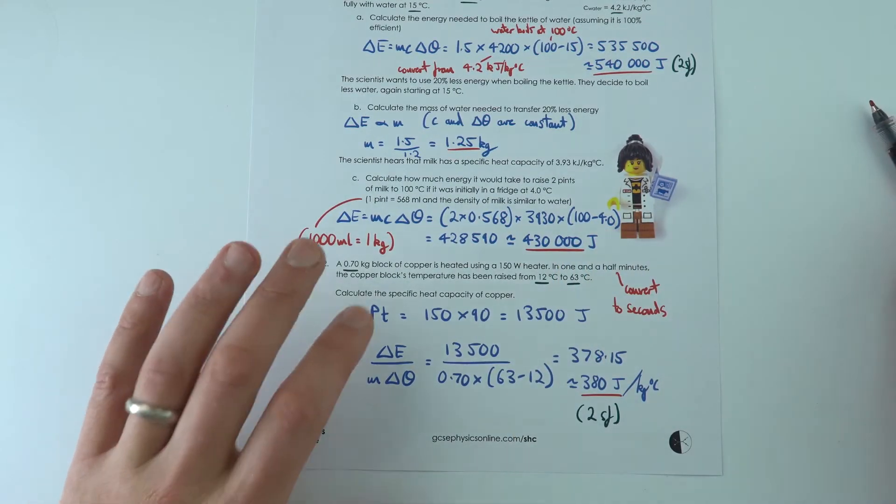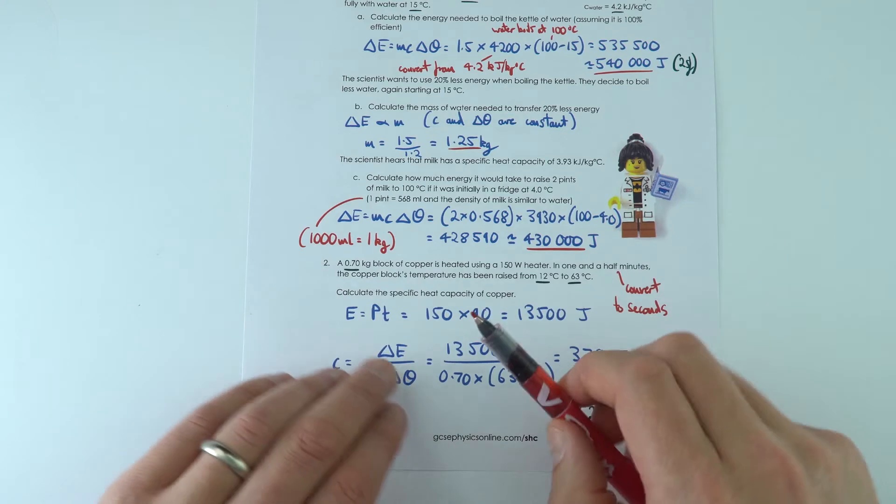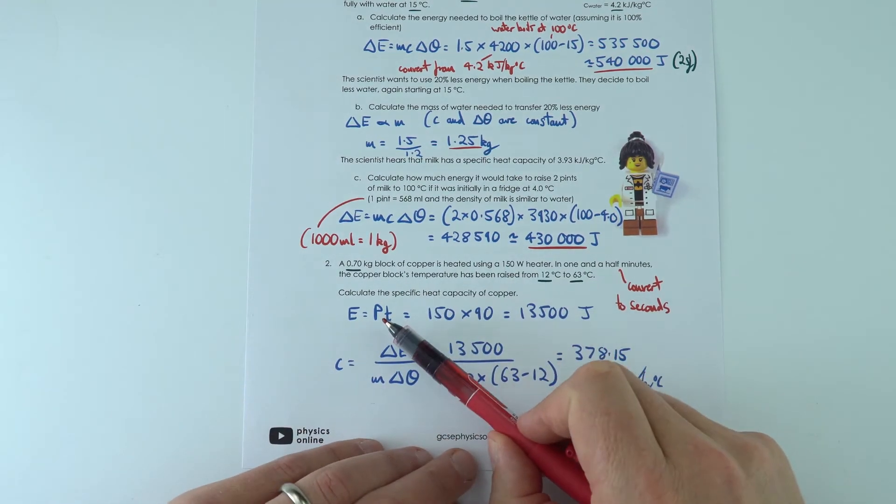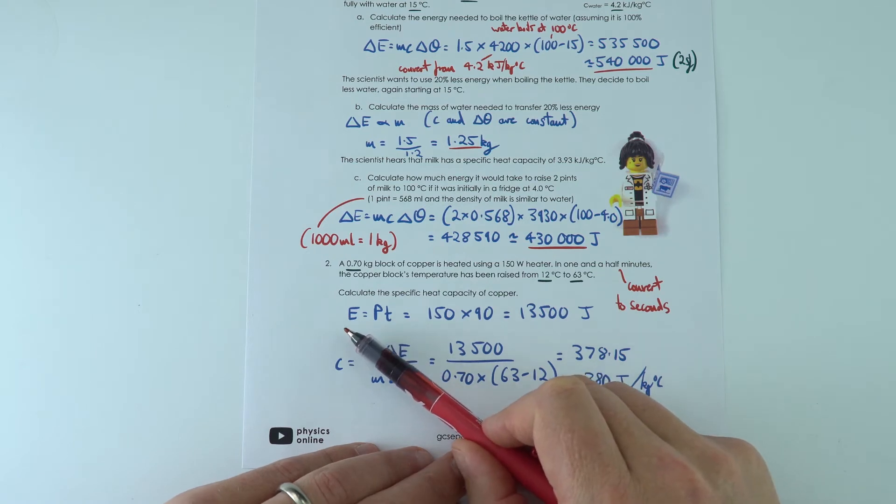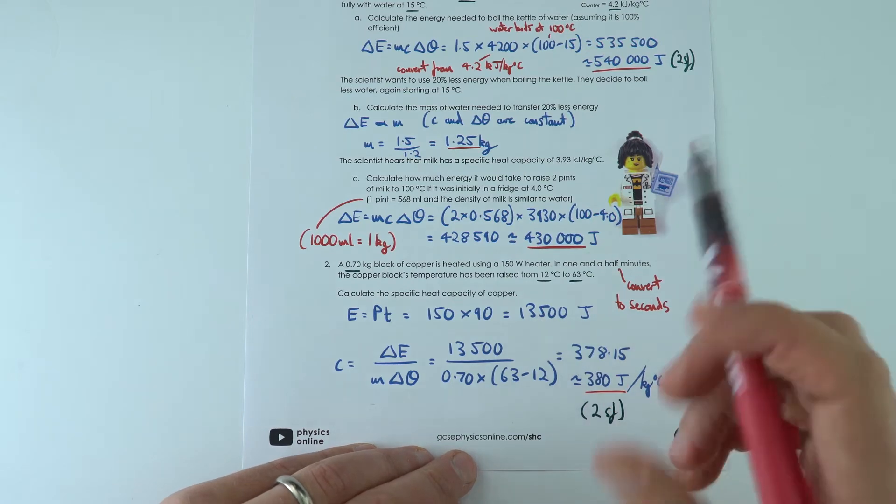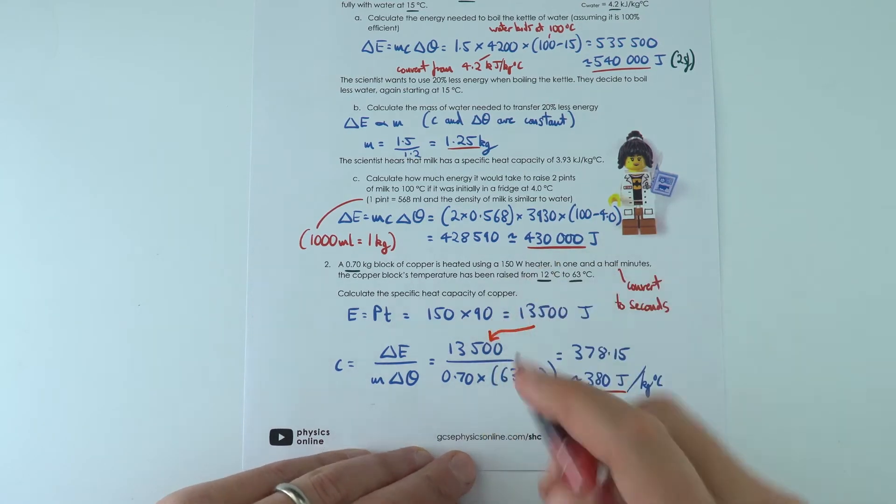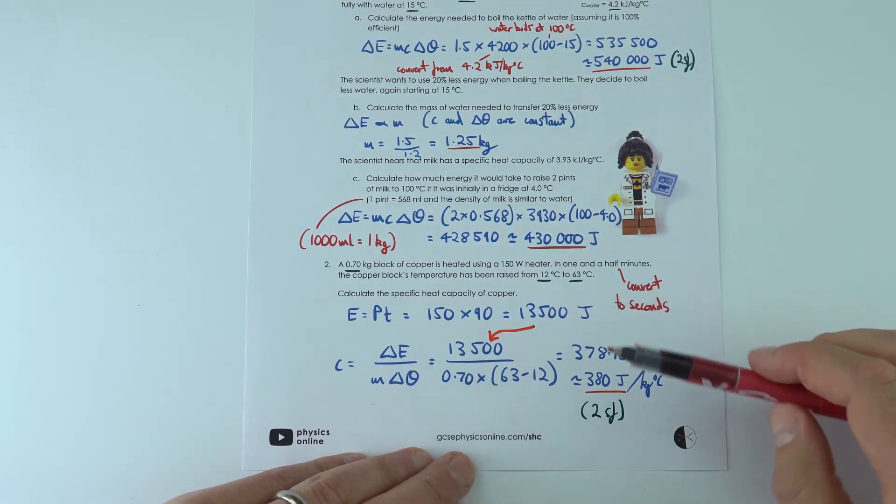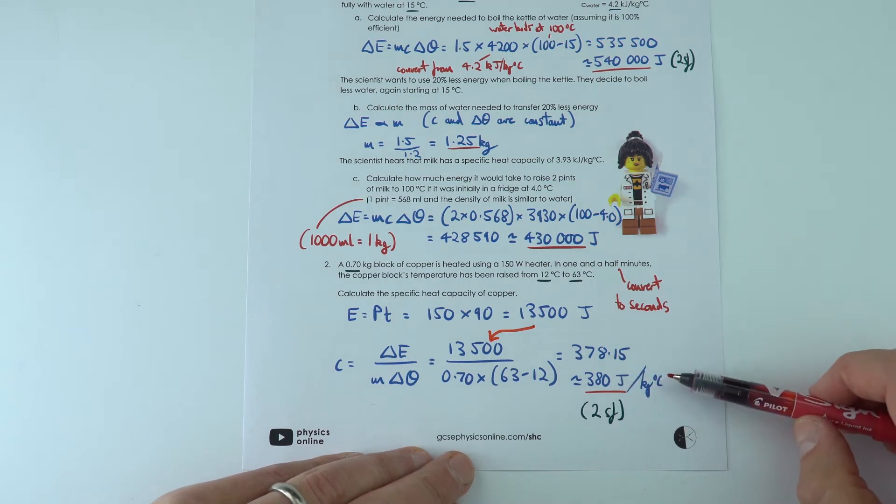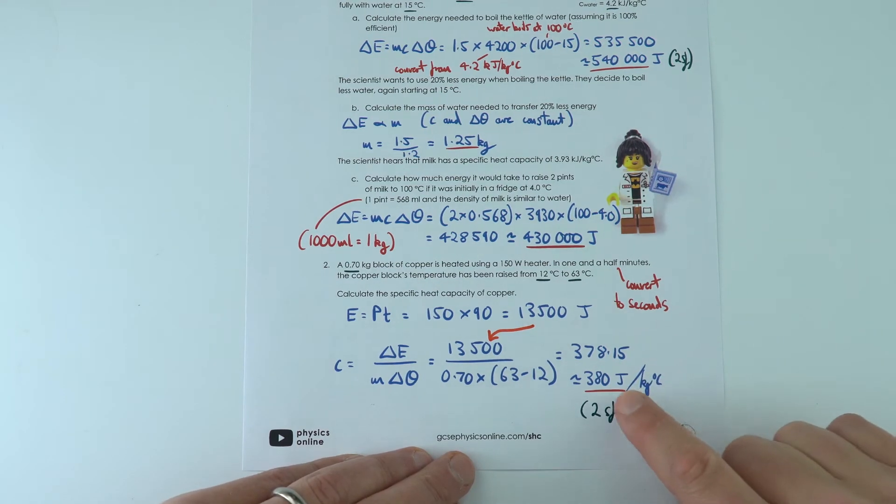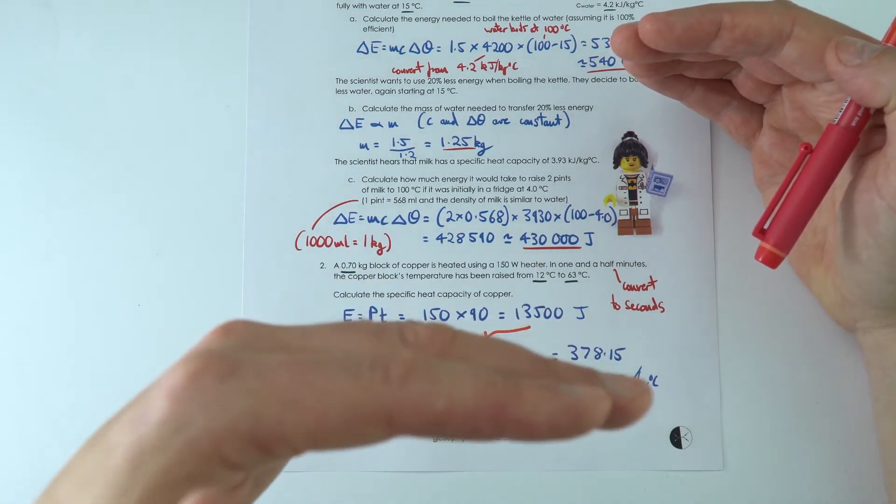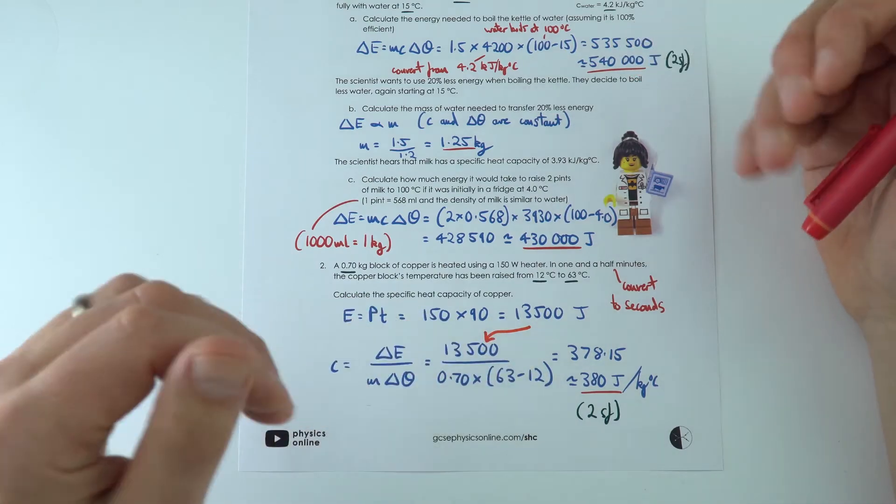The next one is a two-part calculation. The first bit needs to look at the energy transferred. This is where you need to remember that power is equal to energy divided by time. So if we know the power and time, we can work out the total energy transferred. Then we can use this to find the specific heat capacity is about 380 joules per kilogram per degree Celsius. This is a lot lower than water. Water has quite a high specific heat capacity. Metals often have quite a low value.